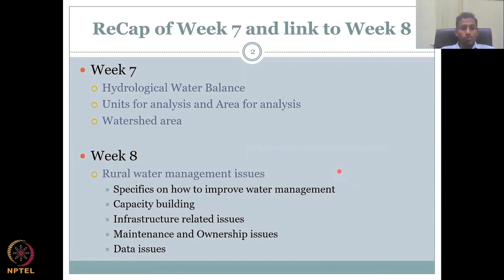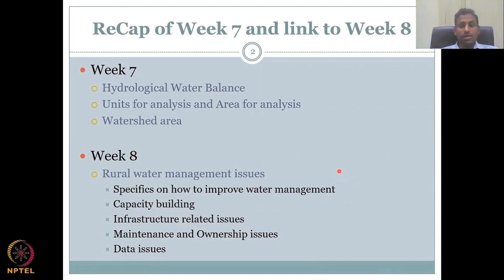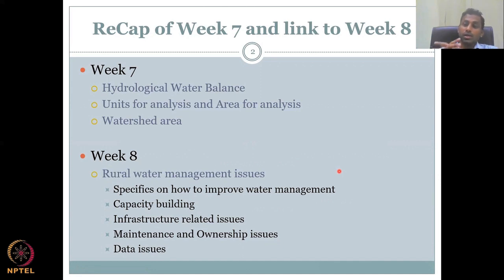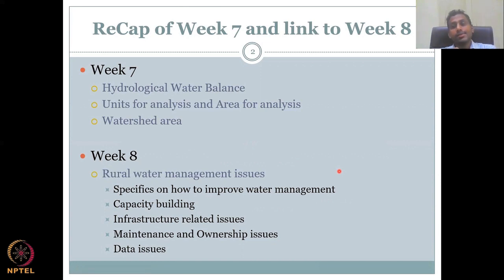In week seven, we looked at the hydrological water balance. We defined the unit of analysis, which is the watershed, and how to determine the area. We had the water balance equations, but the equations have to be placed within a boundary — the watershed boundary — which is our unit for analysis. We looked at methods to determine and quantify the watershed area, and how GIS can help in watershed area delineation and calculation.